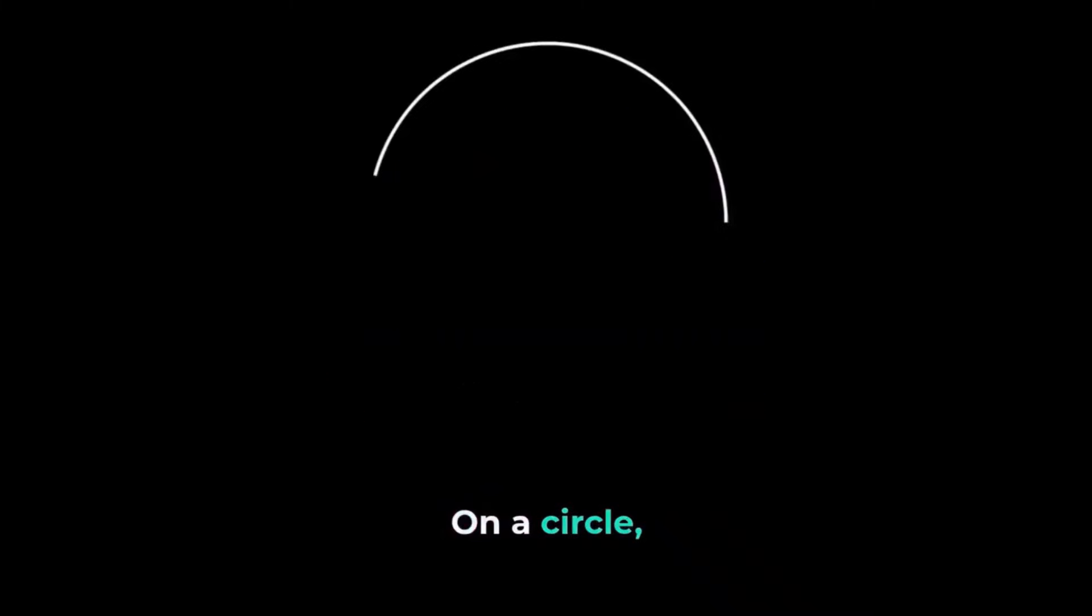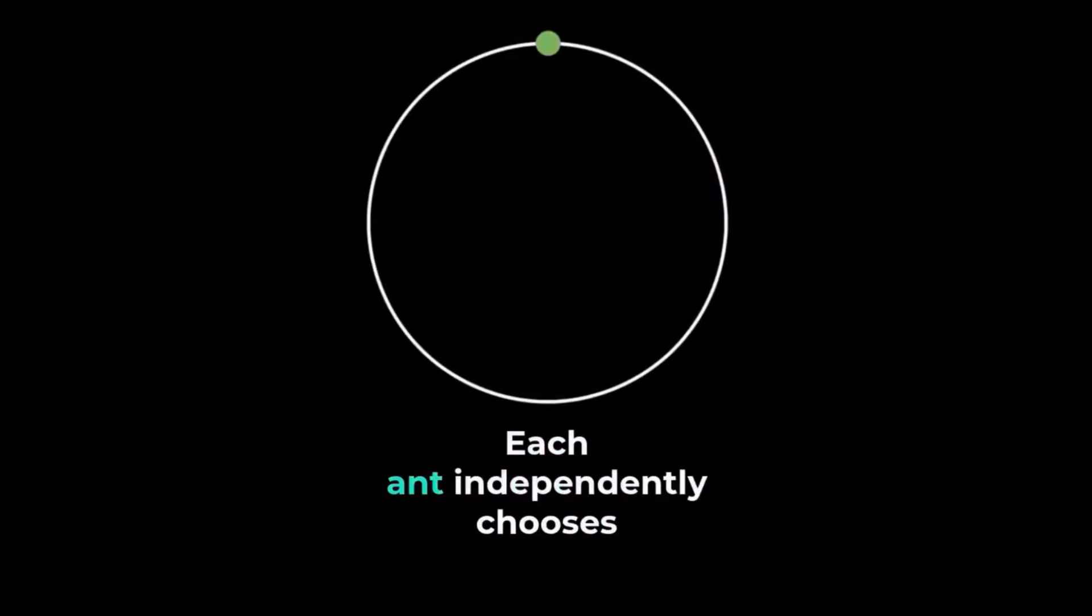Let's consider another problem. On a circle, several ants are placed. Each ant independently chooses to move either clockwise or anticlockwise at random. All ants move at the same constant speed, completing one full circle in exactly one minute. Also, when two ants collide, they simply reverse directions and continue moving.